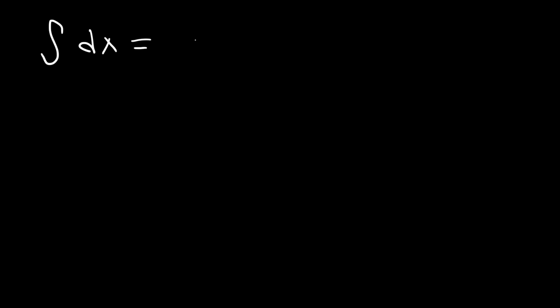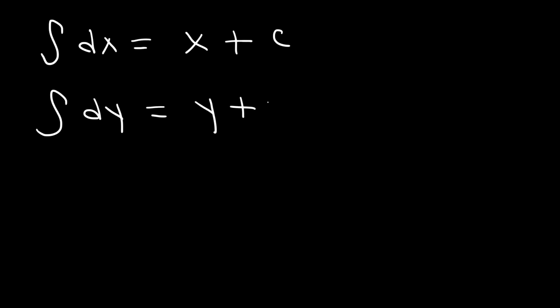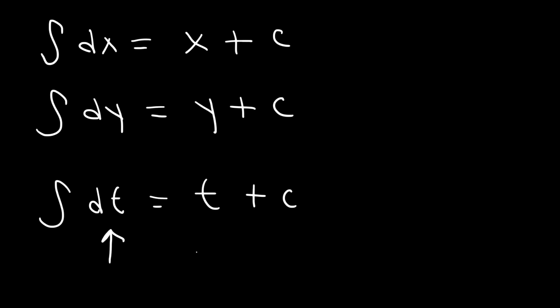In this video we're going to go over some basic integration rules. If you want to integrate dx, this will give you x plus some constant c. If you wish to integrate dy, this will give you y plus c. Or if you want to integrate dt, that will give you t plus c. This is the variable of integration — make sure you always add that particular variable based on what you see.